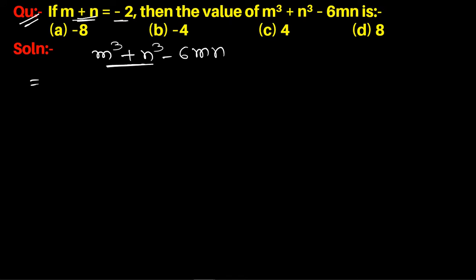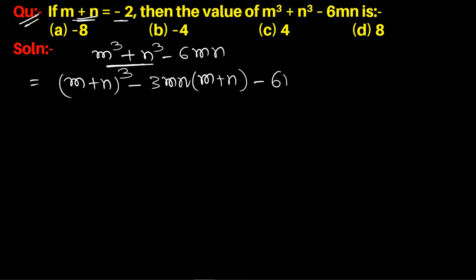We know the formula: m³ + n³ = (m+n)³ - 3mn(m+n). Substituting the given value m + n = -2, this becomes (-2)³ - 3mn(-2) - 6mn.